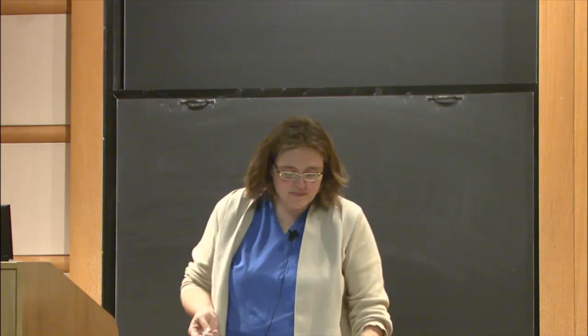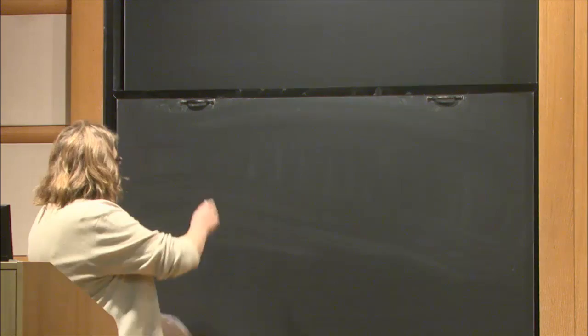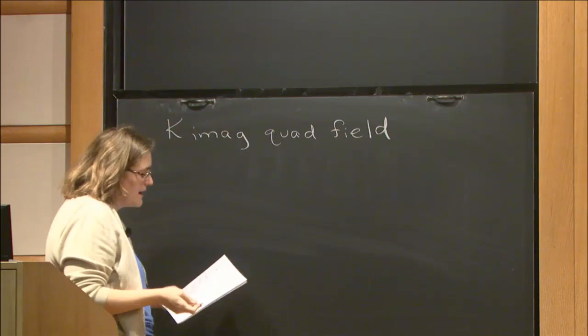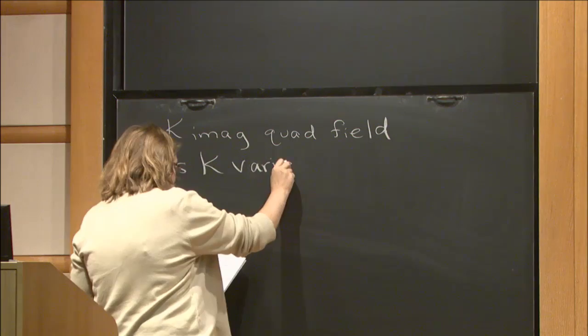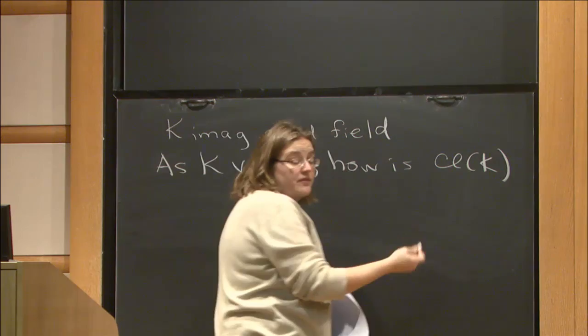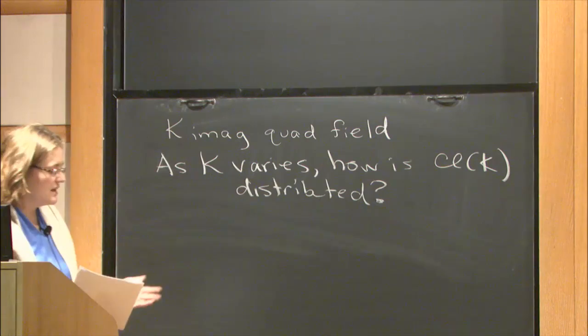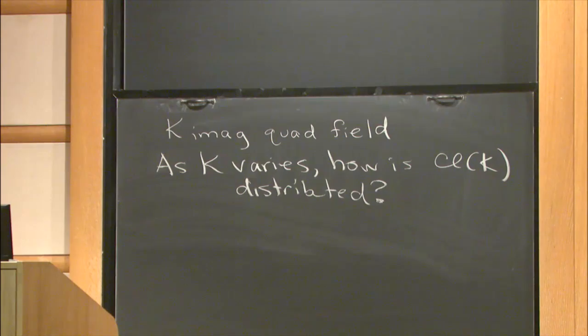The first basic question motivating this talk is: if we consider imaginary quadratic fields, using k to denote an imaginary quadratic field, as k varies, how is the class group of k distributed? How often do we get which kind of groups? You could think of this question more generally as a number field varies, but already in the case of quadratic fields, the phenomena look quite different for imaginary quadratic and real quadratic fields.